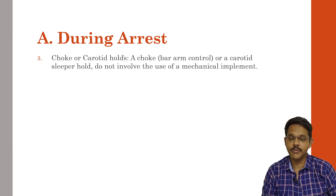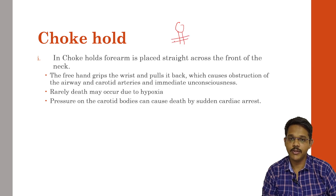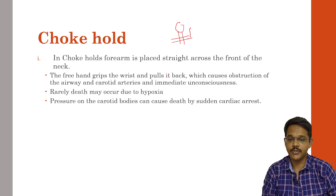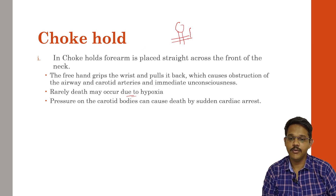The next type during arrest is the choke hold. In a choke hold, the forearm is placed in the front of the neck, parallel to the neck. The free hand of the officer grips the wrist and pulls it back, which causes obstruction of the airway and can lead to immediate unconsciousness. Rarely, death may occur because of hypoxia. Pressure on the carotid bodies may also cause death due to cardiac arrest. The arm is placed in front of the neck and compressed using both hands, leading to compression of the carotid arteries as well as the trachea, causing asphyxia.